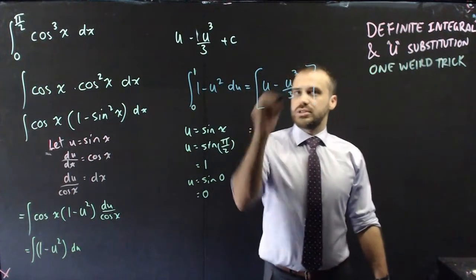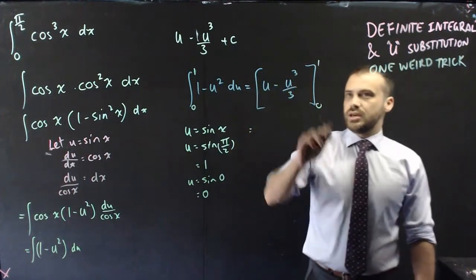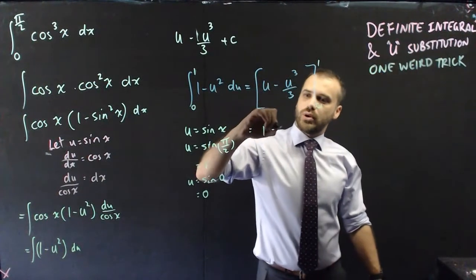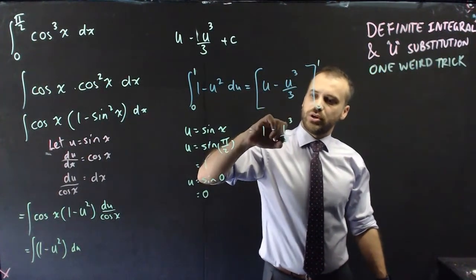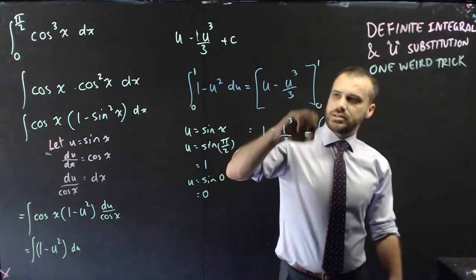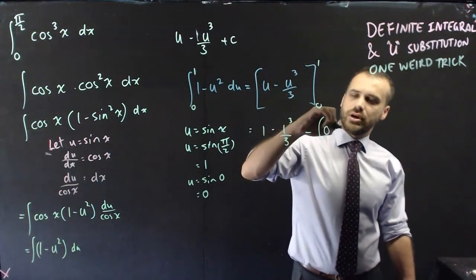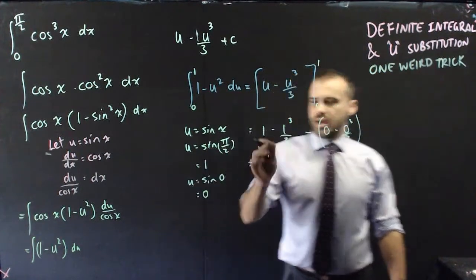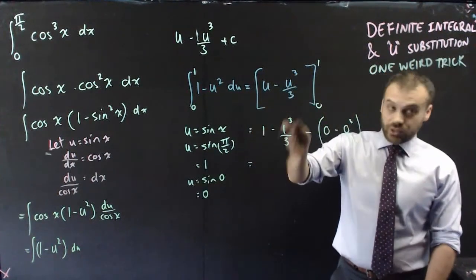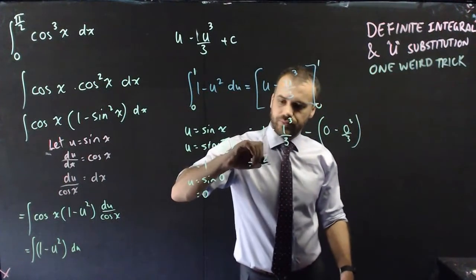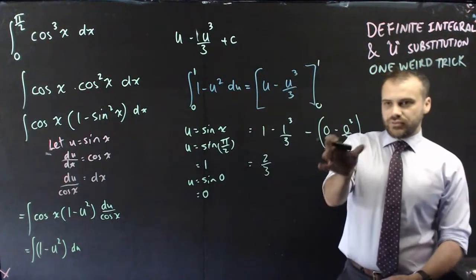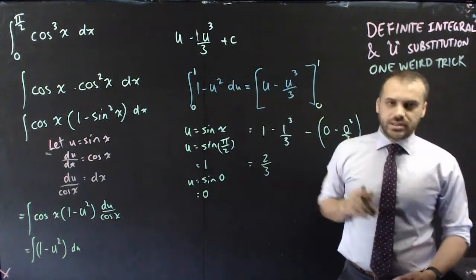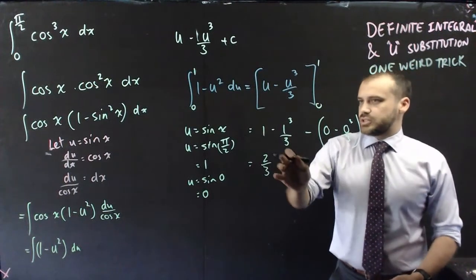All right, so now I can just put 1 and 0 there. I can sub 1 in here, 1 minus 1 cubed over 3, minus 0 minus 0 cubed over 3, and 1 minus 1 third is 2 thirds. And all of that stuff becomes 0, so minus 0 we get 0. And we get a final answer of 2 thirds.